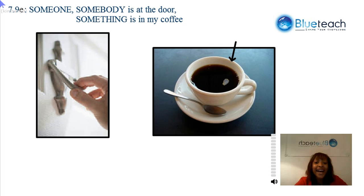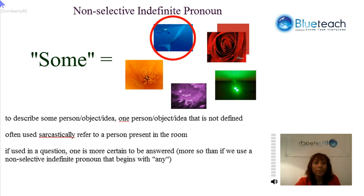Welcome to our final topic in this chapter on pronouns: the non-selective indefinite pronouns. We'll be looking at 'someone,' 'somebody is at the door,' and 'something is in my coffee.' These non-selective indefinite pronouns that begin with 'some' are used to describe some person, object, or idea — one person, object, or idea that is not defined, but that definitely does exist.